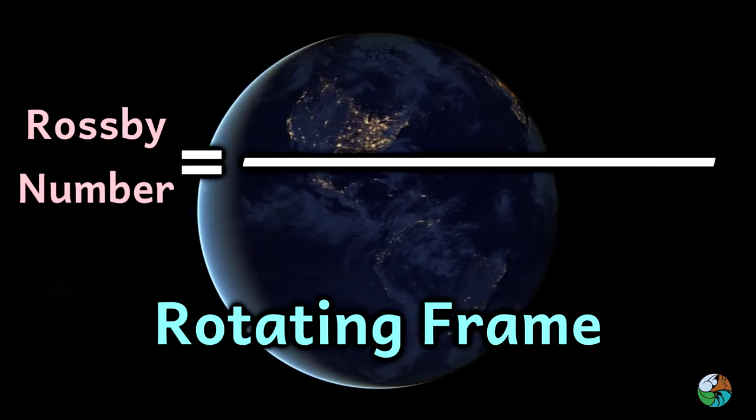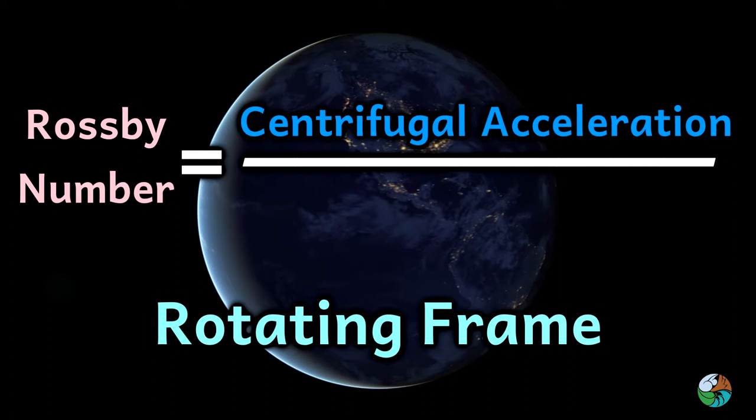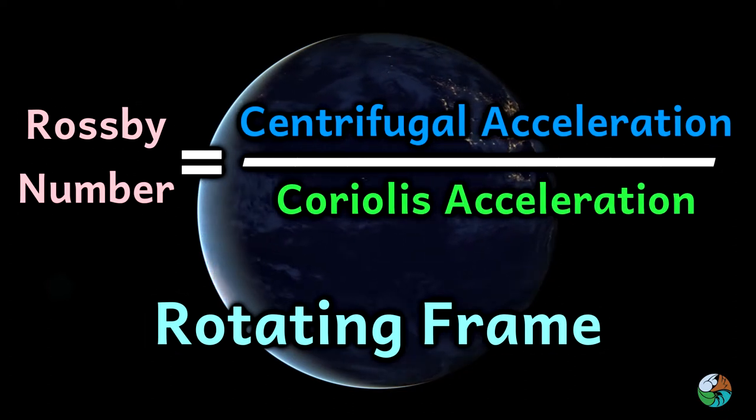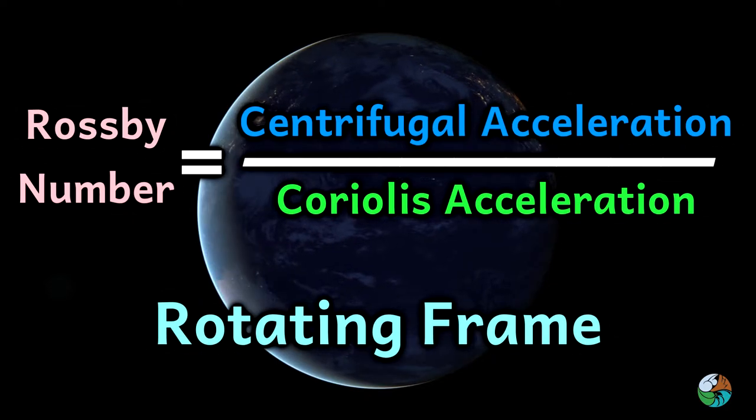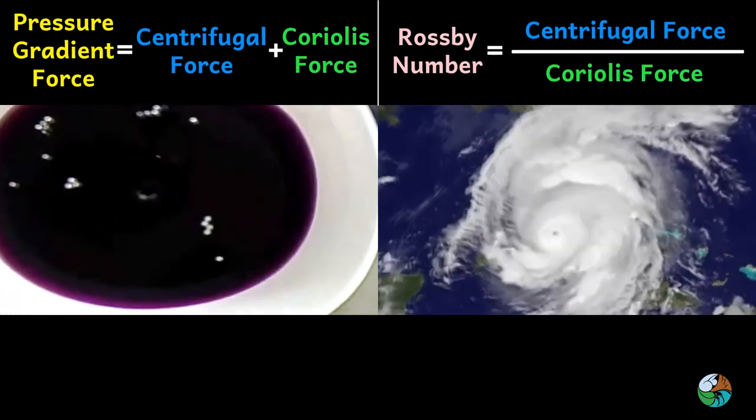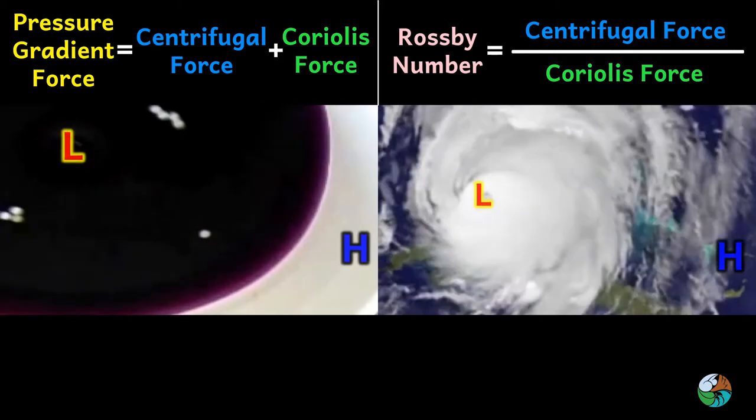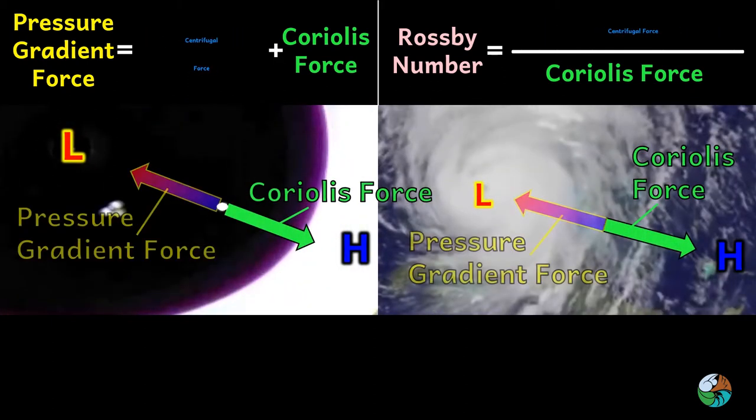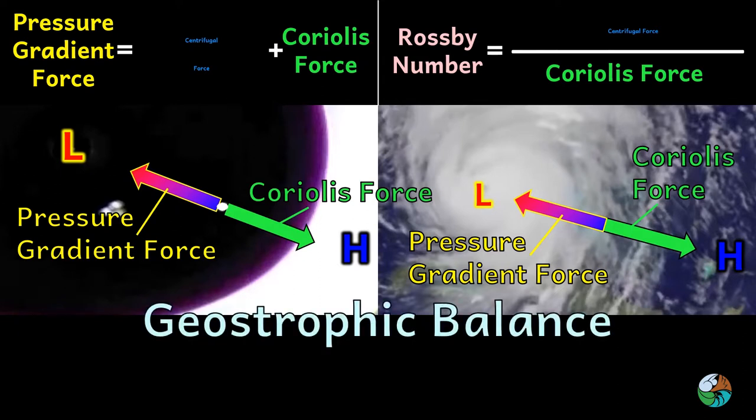Rossby number describes the ratio of centrifugal acceleration to the Coriolis acceleration. At the location far away from the center of the vortex, Coriolis force balances with the pressure gradient force. This is called geostrophic balance. The value of the Rossby number is much smaller than 1.